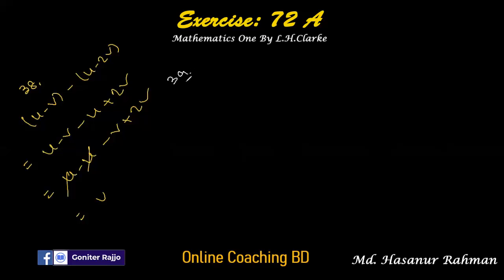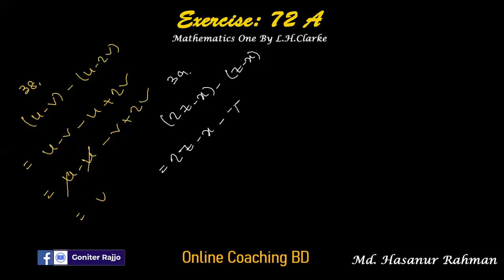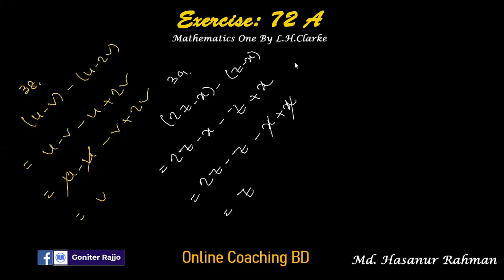Number thirty-nine: 2z minus x minus (z minus x). Expanding: minus into z is minus z, minus into minus x is plus x. Rearranging: 2z minus z is z; minus x plus x cancels. The answer is z.